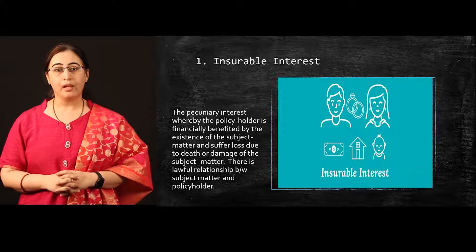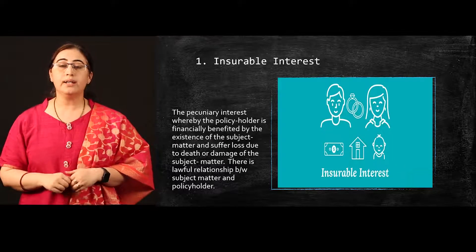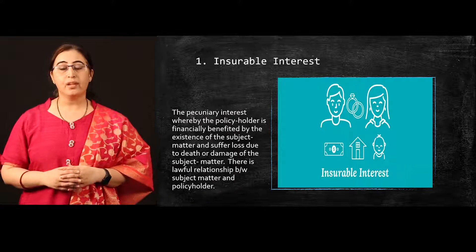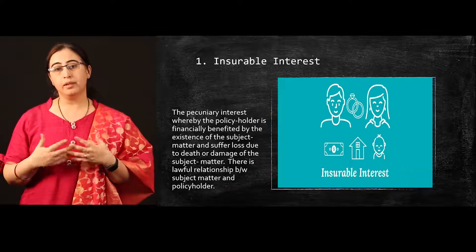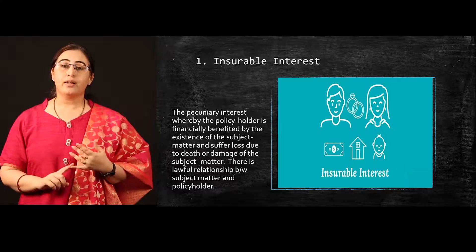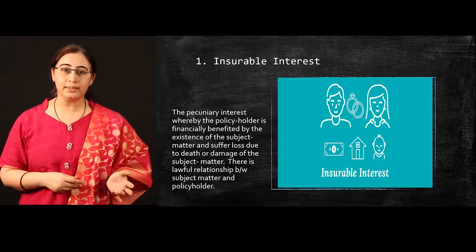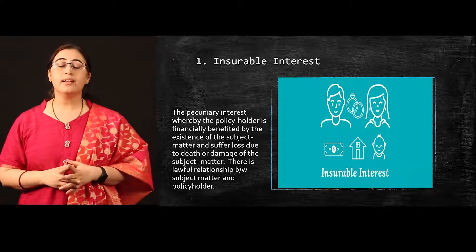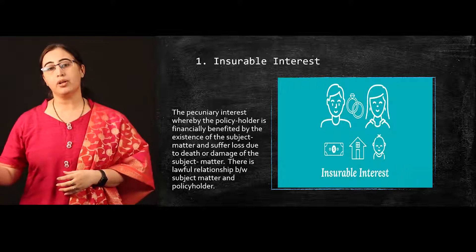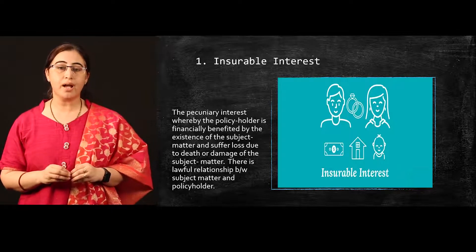The first one is insurable interest — the interest whereby the policy holder is financially benefited by the existence of a subject matter. Until unless you are not having an insurable interest in a particular item or a person, you can't go for an insurance. There are three basic conditions. The first is that there must be an interest — you cannot take an insurance of any random person. The second is that insurable interest is measured in terms of finance, so it is a financial insurable interest. And the third, which is very important, there must be a lawful relationship between the subject matter and the policy holder.